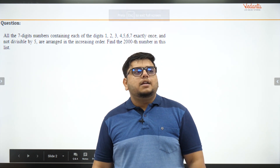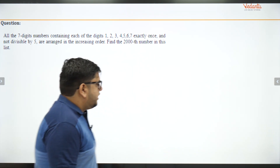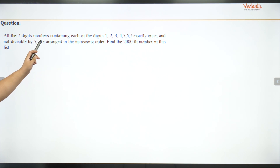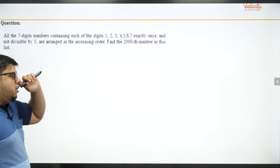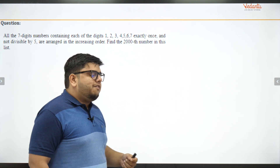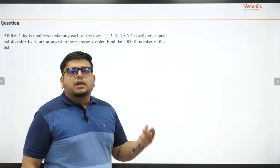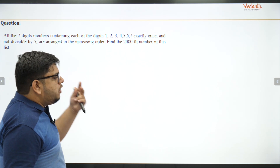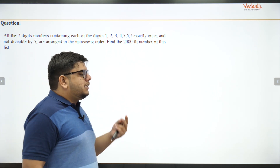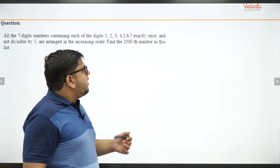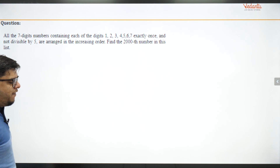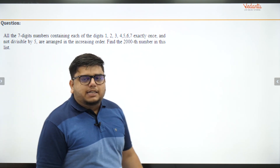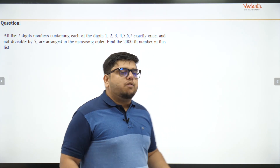The first question was: all seven-digit numbers containing each of the digits one to seven exactly once, which are not divisible by five, are arranged in increasing order. We need to find the two-thousandth number in this list. So we need to find that seven-digit number — it's more like a dictionary ordering problem.